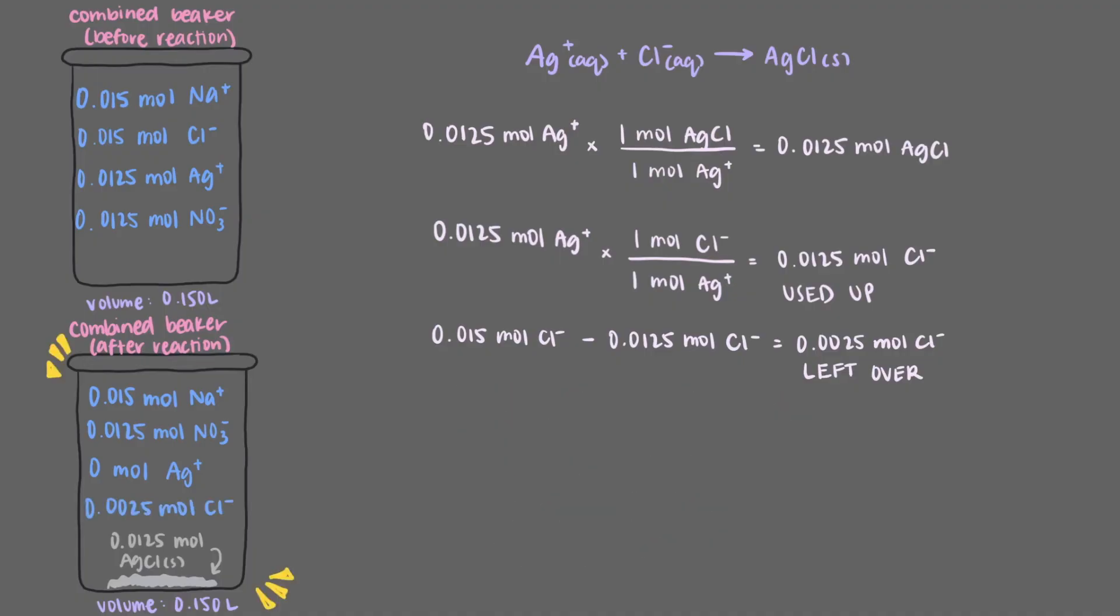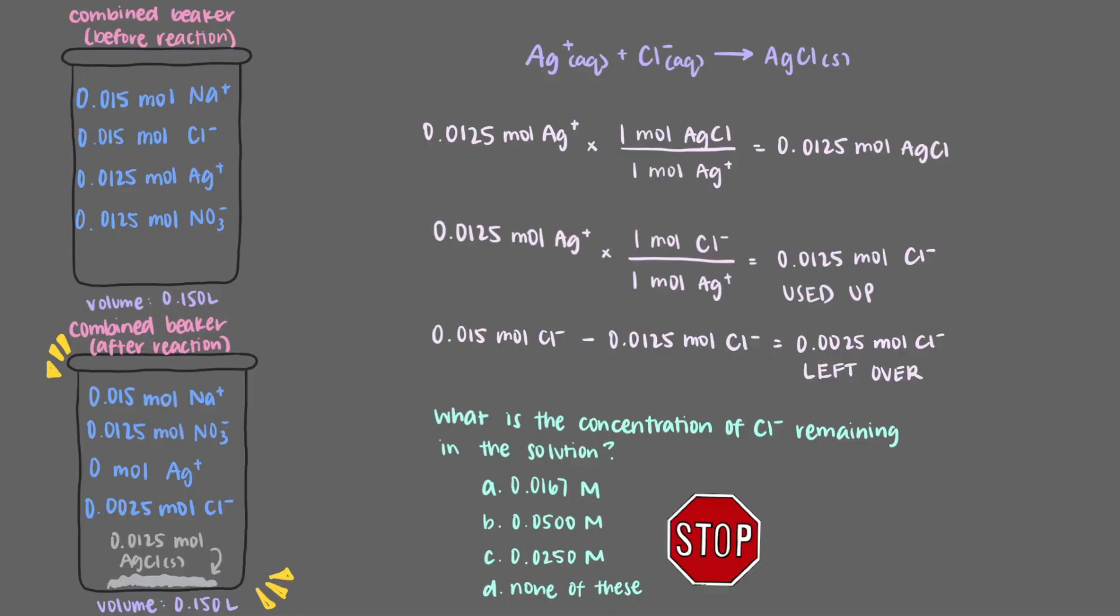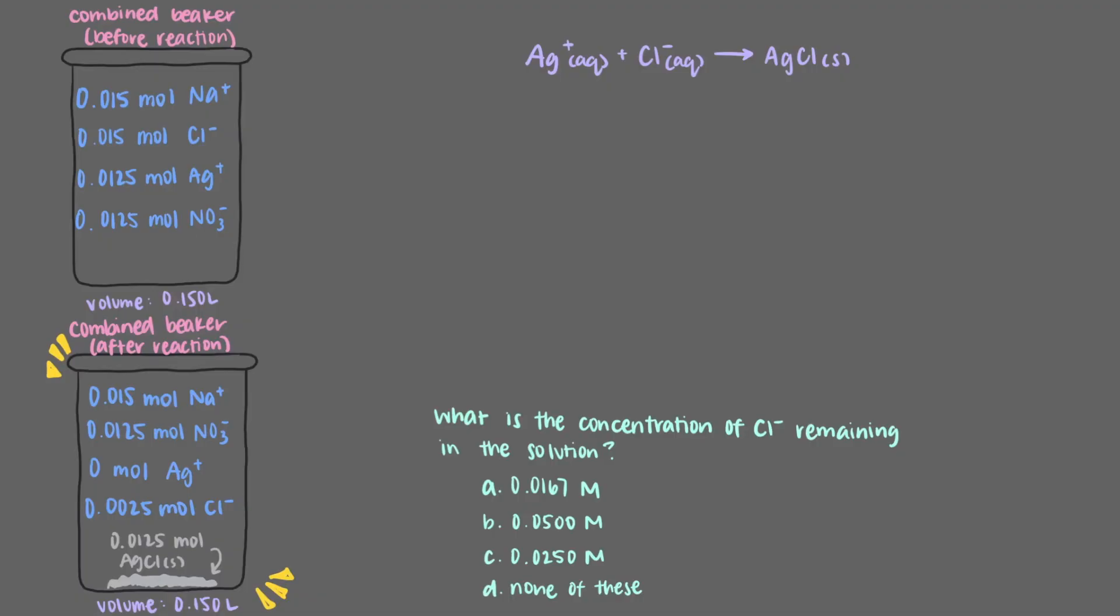This new beaker can answer any question we throw at it. For example, what is the concentration of chloride ion remaining in the solution? The new concentration of chloride ions is 0.0167 molar.